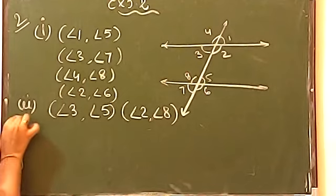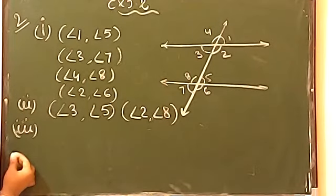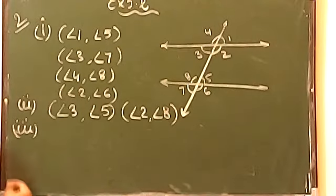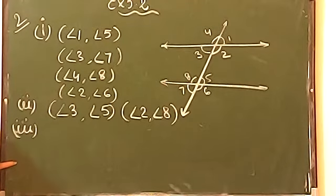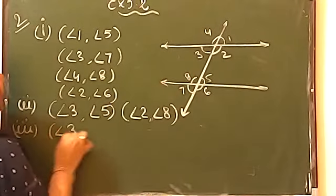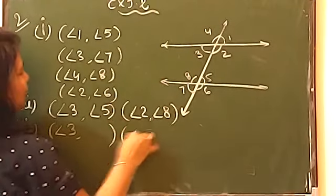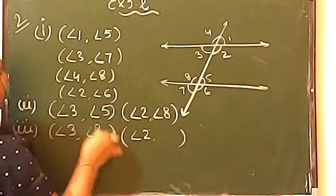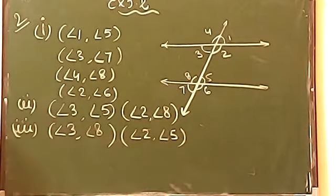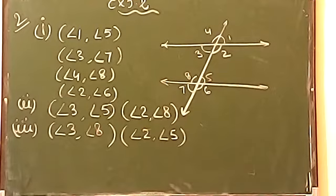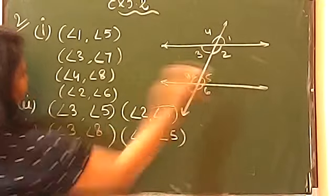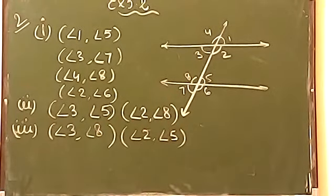Move on to the third one. The pairs of interior angles on the same side of the transversal — that means co-interior angles. Co-interior angle means 3 will go with 8, and 2 will go with 5. These are interior and also on the same side of the transversal.